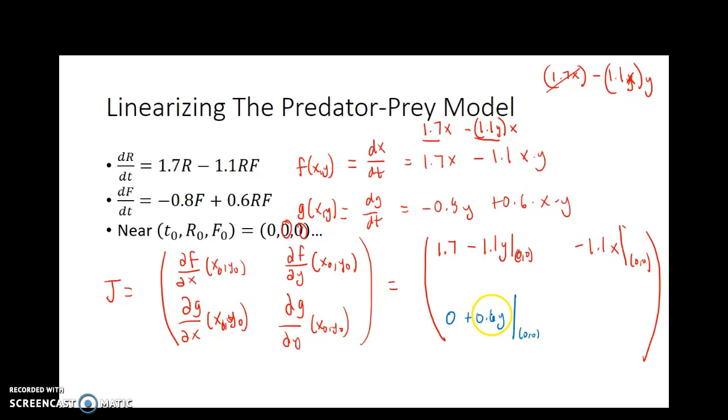So now the same thing holds here. The derivative of this with respect to y, this first term with respect to y is just negative 0.8. And the derivative of 0.6xy is just plus 0.6x. And that needs to be evaluated at the initial condition 0, 0. And so once I do all of that, so if I plug in 0 for y here, I'm just left with a coefficient of 1.7.